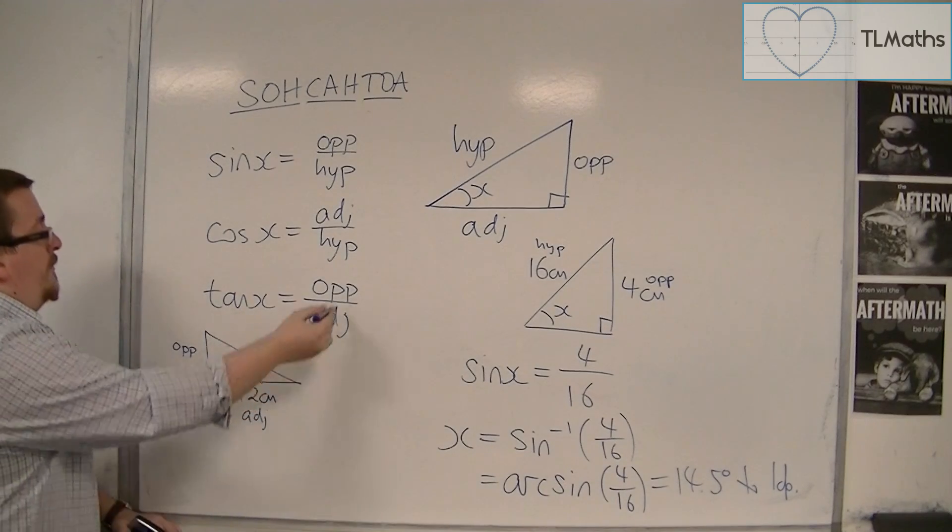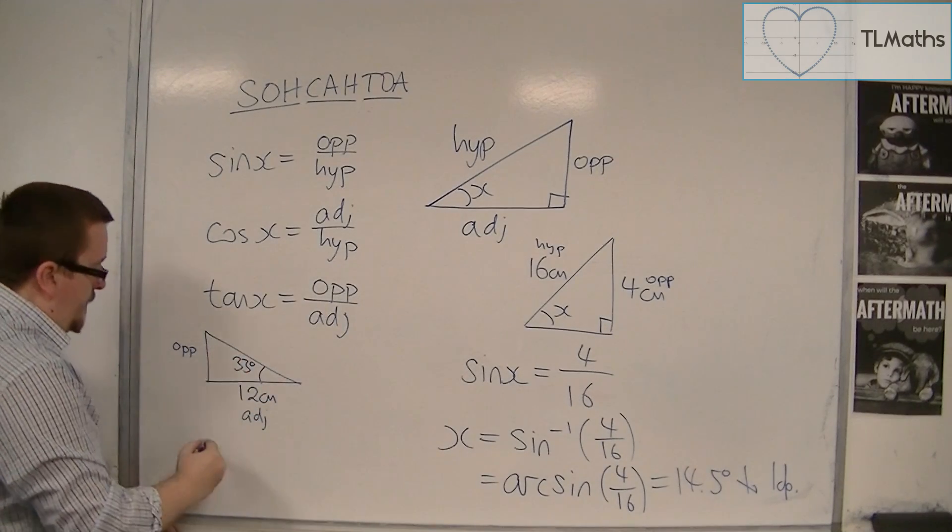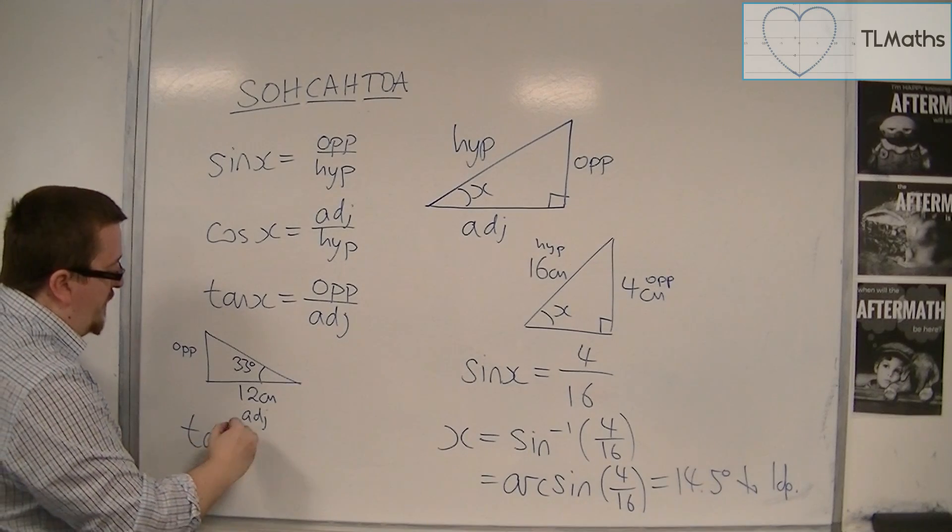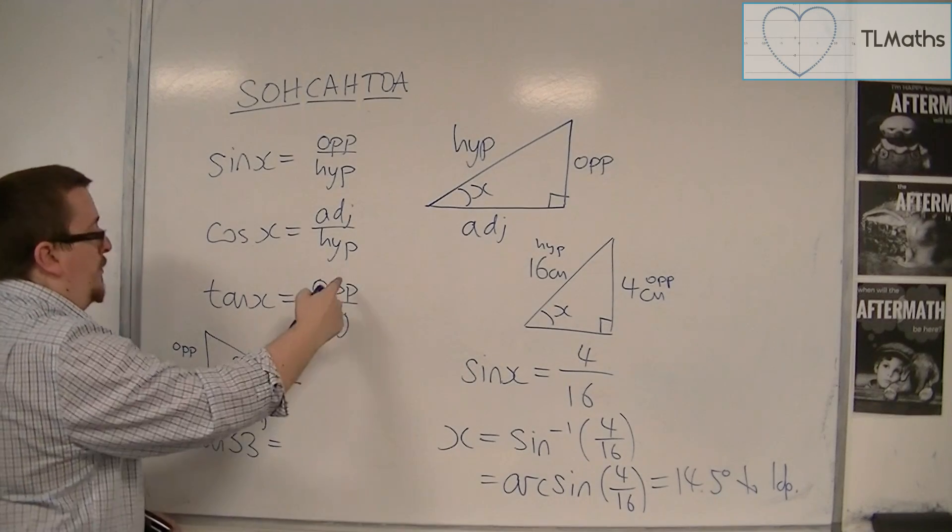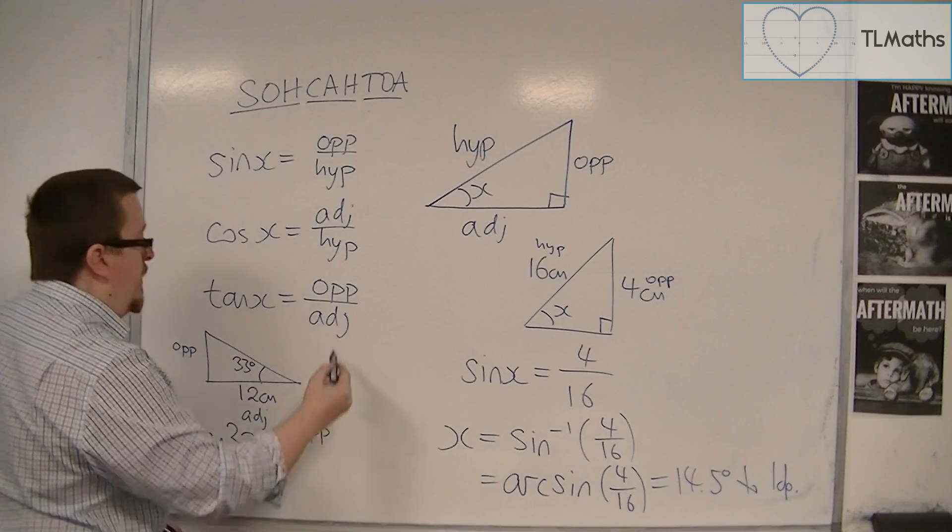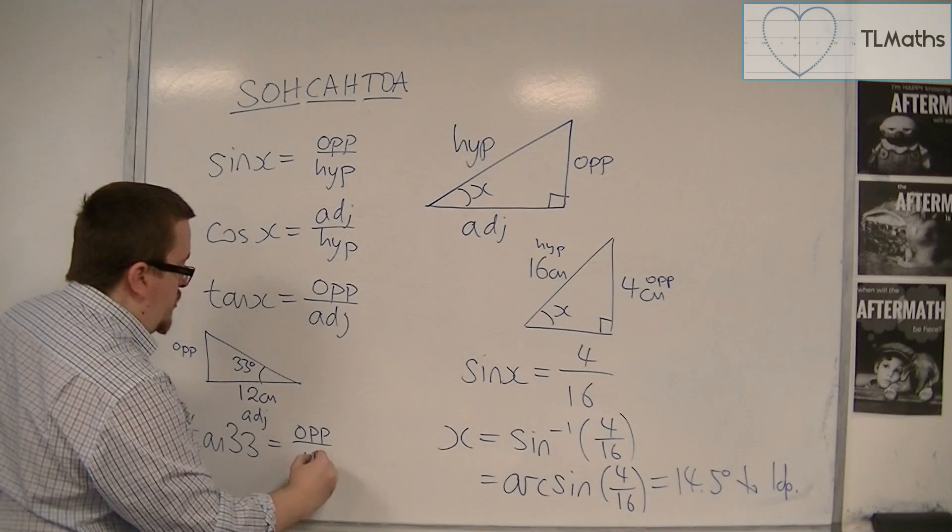So what I've got is the adjacent and the opposite. So that means I've got to use the tan formula. So tan of the angle is equal to the opposite, that's the one I don't know, divided by the adjacent, which is 12.